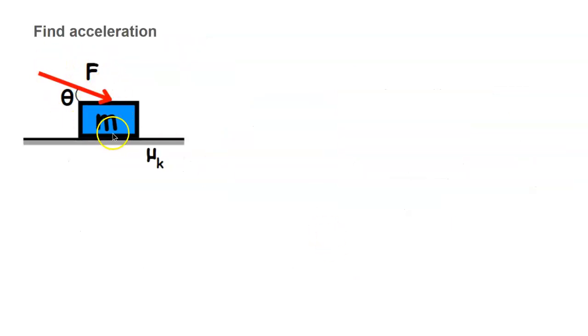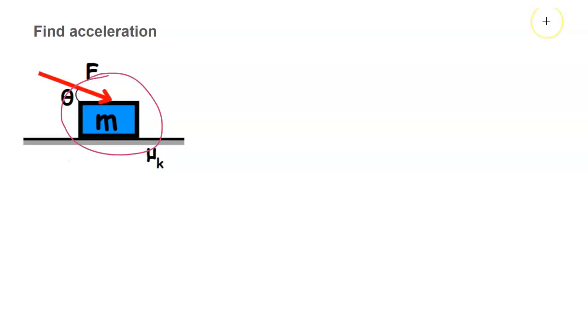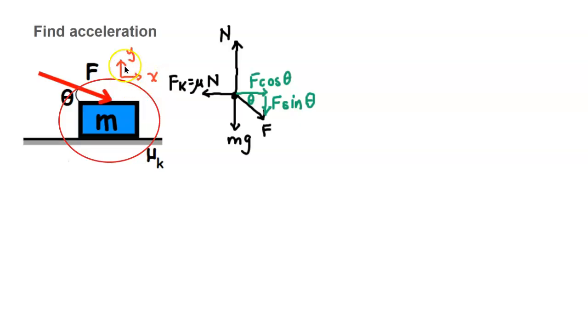Our first problem is a force-at-an-angle problem, where we have a force pushing a mass at a certain angle theta across a surface with a coefficient of friction mu_k. The first step is to indicate our system boundary, and then the second step is to indicate the positive direction. We're going to make right positive and up positive. Then we're going to draw our force diagram.